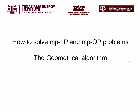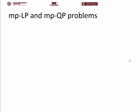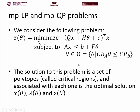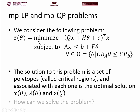The idea is to understand how we can solve MPLP and MPQP problems. The type of problem we're looking at is an optimization problem with a positive definite matrix Q, optimizers X, parameter theta, affine constraints, and a polytope as a parameter space, so theta is bounded in the polytope. The solution is a set of polytopes called critical regions, each with the optimal solution X, Lagrangian multipliers, and objective function as functions of theta.